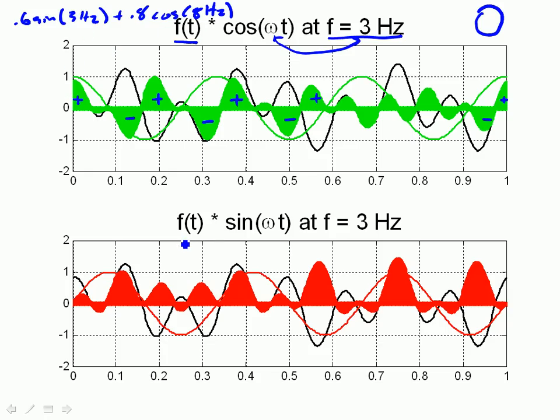However, if we look at this function multiplied by the sine at 3 hertz, I get positive, positive, there's a small negative, positive, positive, negative, positive. You see how it goes. The positive parts far outweigh the negative parts.